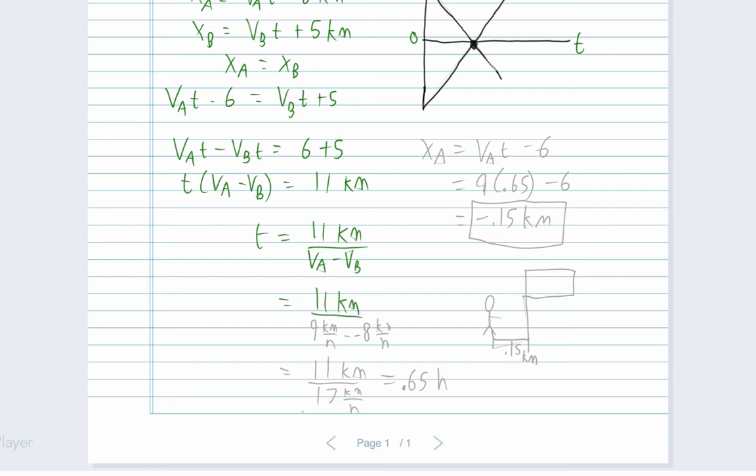Keep track of the minuses because runner A's velocity is nine kilometers per hour, minus runner B's velocity, which is really negative eight kilometers per hour because it's heading in the negative direction. Which gives us 11 km over 17 kilometers per hour. When we do that and think about the units, that makes sense because we'll end up with hours for our units. Then 11 divided by 17 gives us about 0.65 hours. So that's the time.